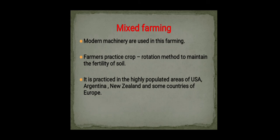Mixed farming is farming where modern machinery is used and farmers practice crop rotation to maintain soil fertility. As the name suggests, it involves both the growing of crops and the raising of livestock. The cultivation of crops alongside the rearing of animals for meat or eggs defines mixed farming, and different types of crops are grown to maintain fertility.